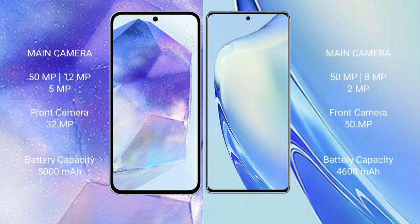Samsung Galaxy A55 features a triple rear camera setup: 50MP, 12MP, and 5MP, with a 32MP front camera. vivo V27 also features a triple rear camera setup: 50MP, 8MP, and 2MP, with a 50MP front camera.